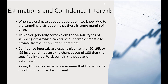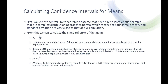Confidence intervals are usually given at 0.90, 0.95, or 0.99 levels, and measure the chances out of 100 that the specified interval will contain the population parameter. Basically, we are 90% confident that our sample statistic is accurately capturing our population parameter. For example, if Biden's approval is 44% plus or minus 4% using a 95% confidence interval, we are saying we're 95% confident that Biden's actual approval rating in the population as a whole is between 40% and 48%. This only works because we assume our sampling distribution approaches normal as we get a larger sample.